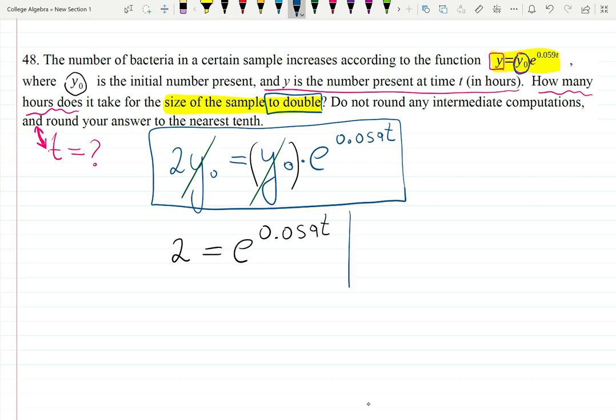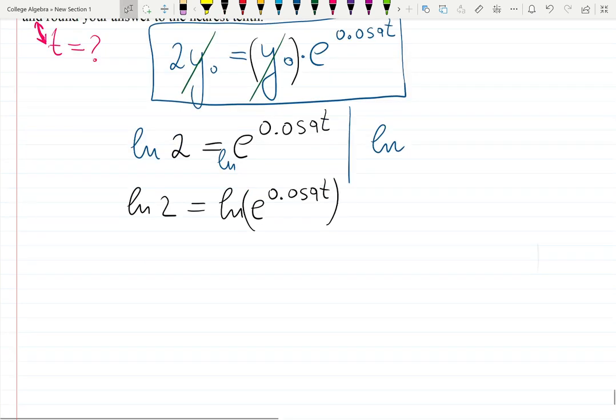After this, you already can use the definition of the logarithmic function if you want. If you freak out about what I just said, just apply log to both sides. That's what I do all the time. And then here and then there, ln 2 equals ln e to the 0.059t. This situation with the previous example repeats.